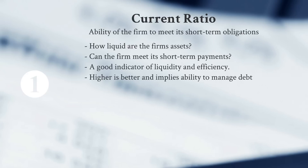Finally, number one — our most commonly used financial ratio — is the Current Ratio. It measures the ability of the firm to meet its short-term obligations, where short-term means maturing within one year. We're looking at how liquid the firm's assets are and whether they can meet upcoming payments. Higher is better and implies strong ability to manage short-term debt.